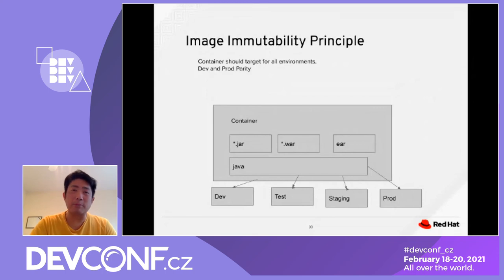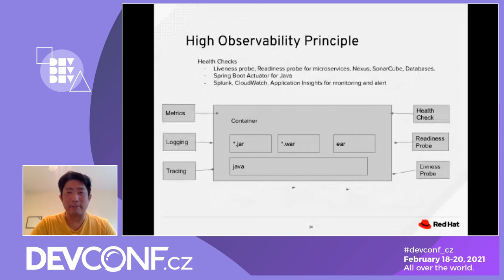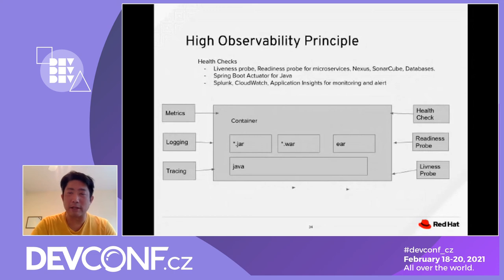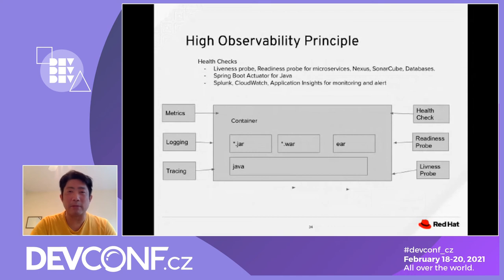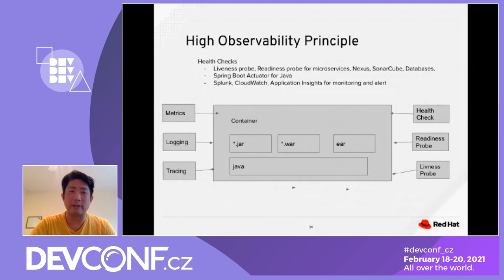High Observability Principle: each container should have its own health check. Health checks include liveness probes and readiness probes for microservices — for example, SonarQube databases or Spring Boot Actuator for Java. At the container layer, we should use Splunk, CloudWatch, or Application Insights for our monitoring and alerting.